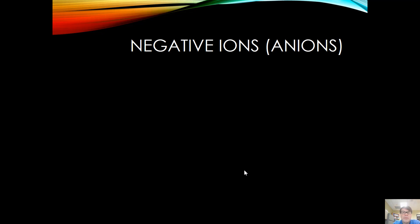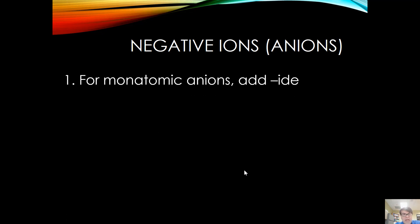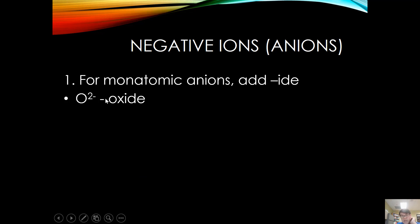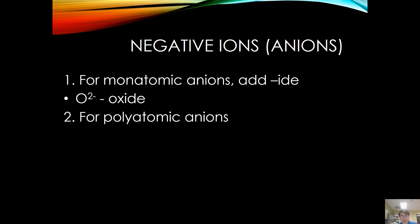Naming negative ions called anions takes a little longer. If you have a single-atom anion, you add -ide to it. For example, a single oxygen with a 2-minus charge is called oxide — it's monatomic and has a negative charge, so it's an anion. There are also polyatomic anions, where the negative anion is made up of more than one atom.